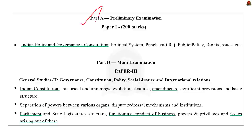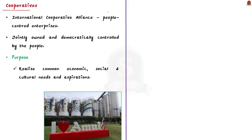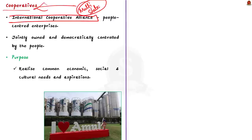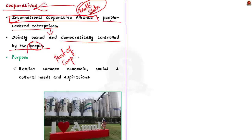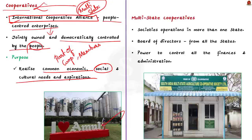Let us understand what multi-state cooperatives are. According to the International Cooperative Alliance, cooperatives are defined as people-centered enterprises which are jointly owned and democratically controlled by the people themselves. The people function as members of the cooperatives, and these cooperatives help members realize common economic, social and cultural needs. One of the best examples is Amul, an Indian dairy cooperative society based in Gujarat, owned by nearly 12 million farmer members.